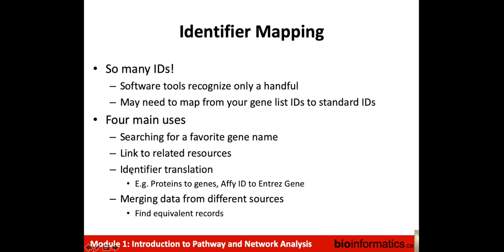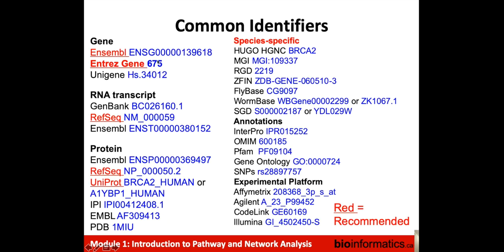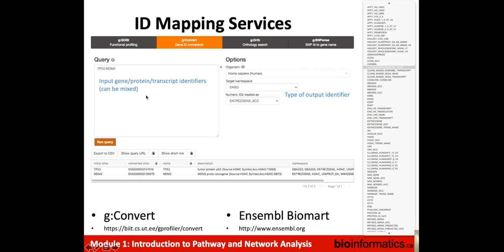There are different reasons to do identifier mapping — the main one is converting database numbers like integers associated with Entrez Gene ID to human readable names, or to convert between these when you need to input your gene list into a tool that only recognizes some identifiers. One example identifier mapping service is called gconvert, where you can input some genes or official names or identifiers, choose the type of output identifier from a very long list, and it will tell you what a gene is also called in a given database. gconvert is a useful tool for mapping identifiers if you need it.